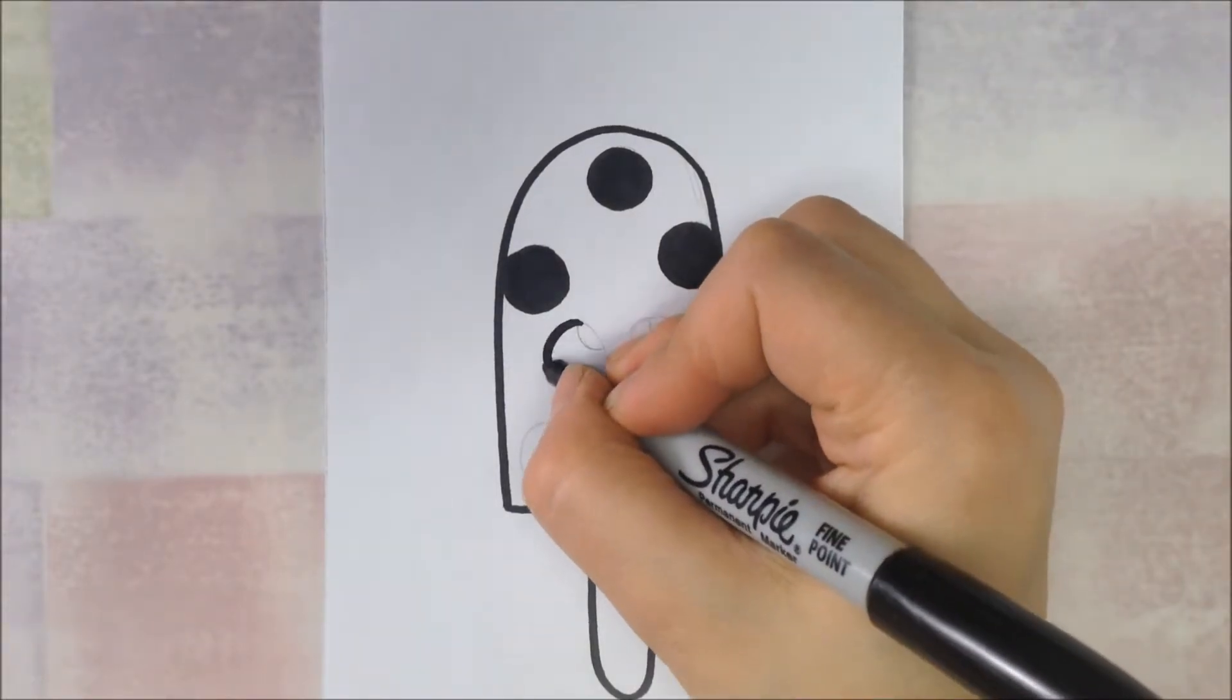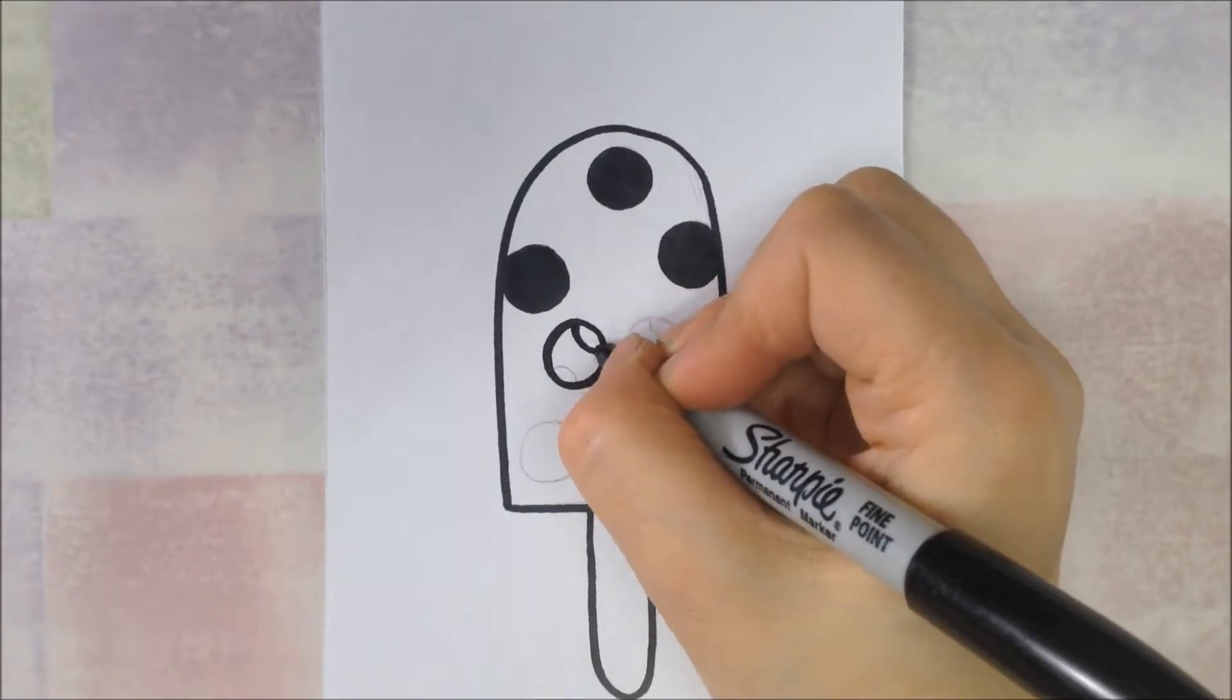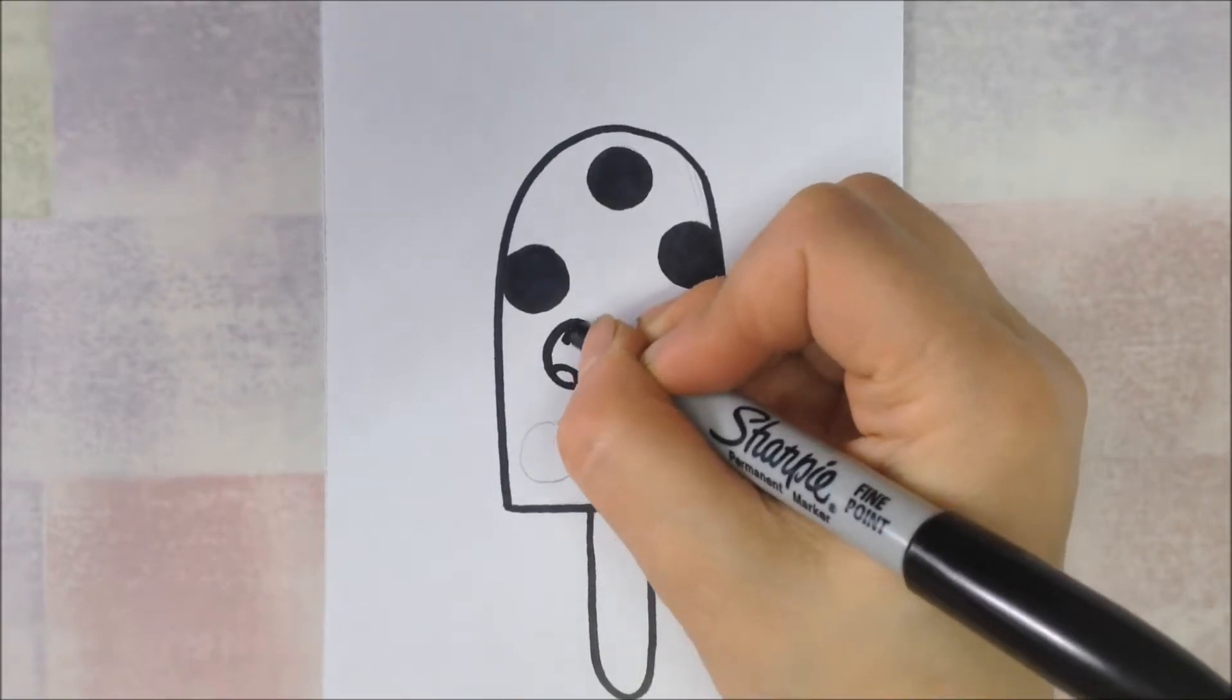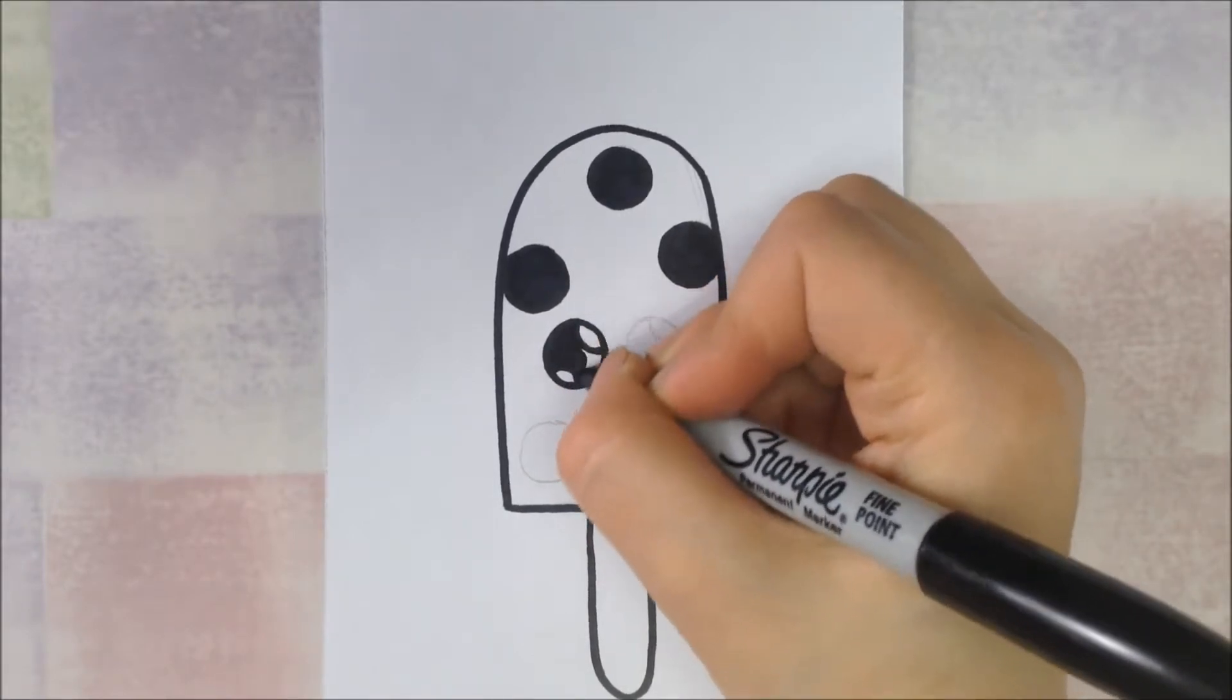For the eyes, we're going to outline the eye and outline the lines we drew for the reflections, but we're only going to color in the center part. That way the reflections stay white.